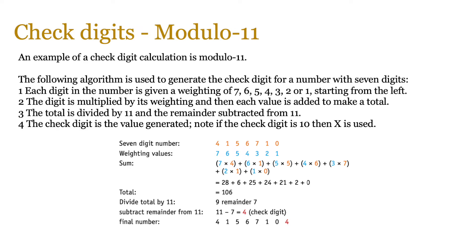The digit is then multiplied by its weighting, and then each value is added to make a total. This total is divided by 11, and the remainder subtracted from 11. The check digit is that value generated, and if the check digit is 10, then X is used; otherwise, you use whatever digit is left.